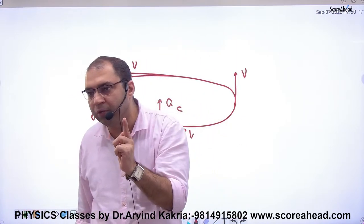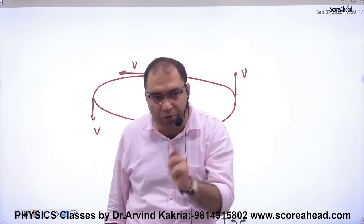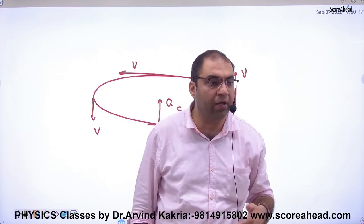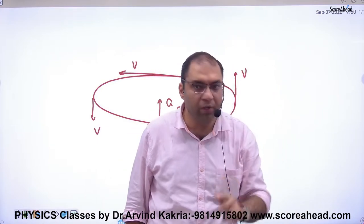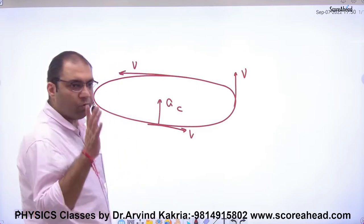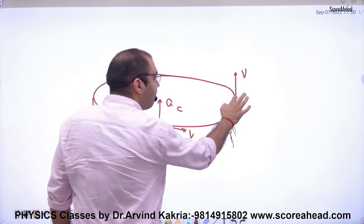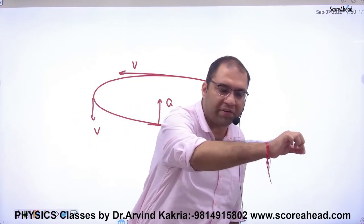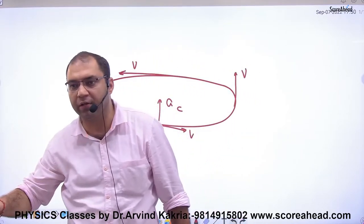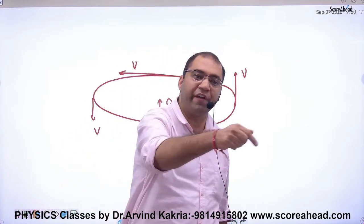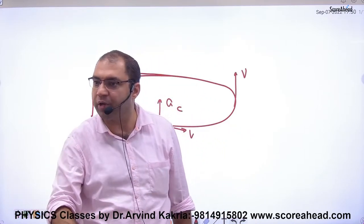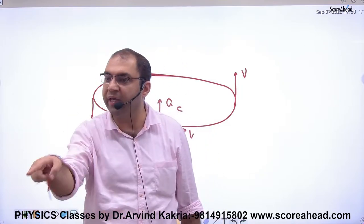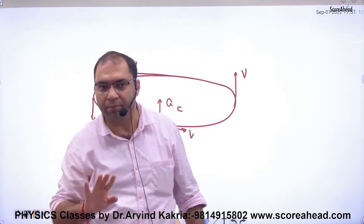Point one: when velocity value does not change and only direction changes, centripetal acceleration is generated. Point two: imagine the velocity value also changes — one meter per second, two meter per second, three, four. If the velocity value changes, this case is no longer uniform circular motion; it becomes non-uniform circular motion.